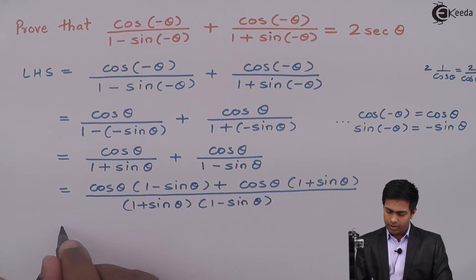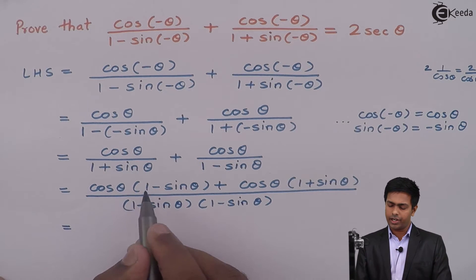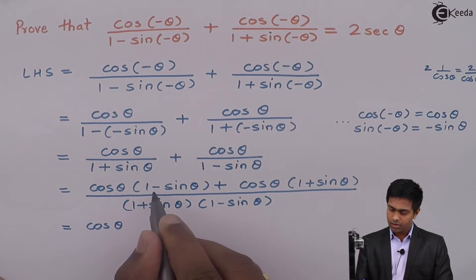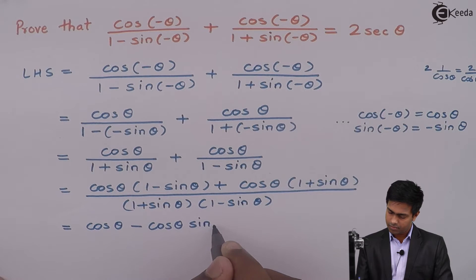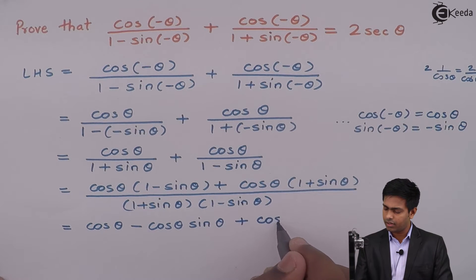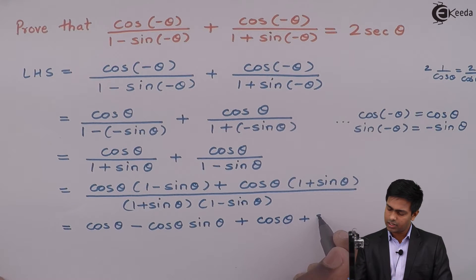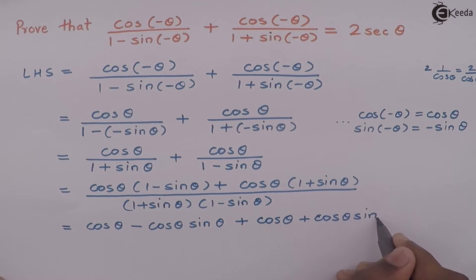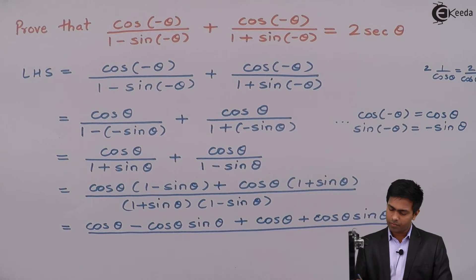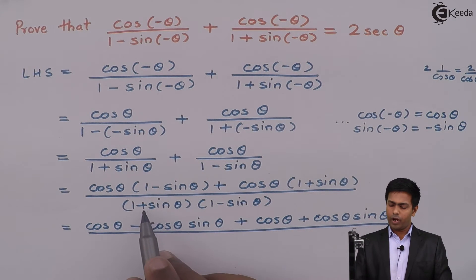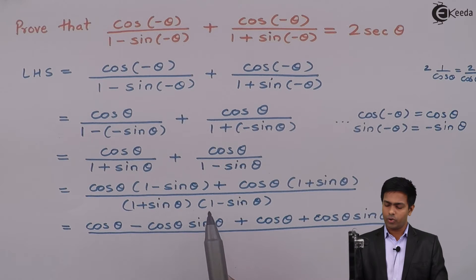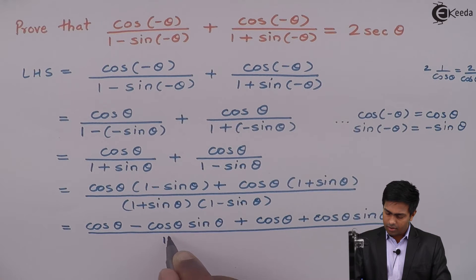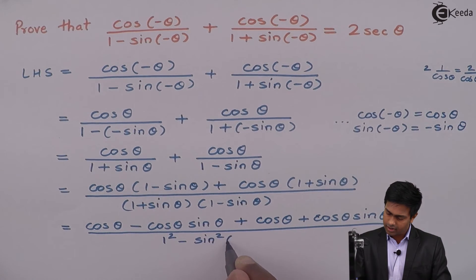Let us multiply the first bracket with cos θ: cos θ × 1 = cos θ, minus cos θ sin θ, plus cos θ × 1 = cos θ, plus cos θ sin θ — all over the denominator. Here we can apply the formula (A + B)(A - B) = A² - B², so the denominator becomes 1² - sin²θ.